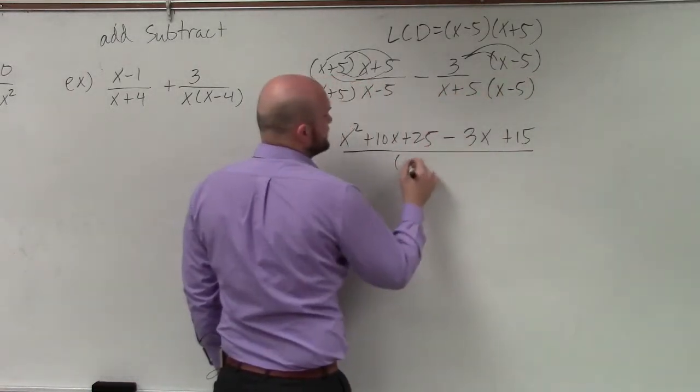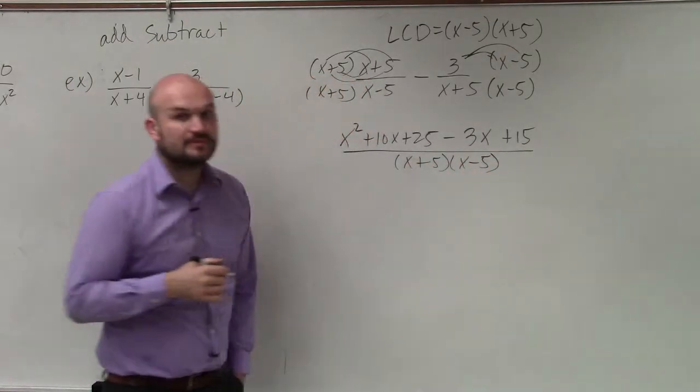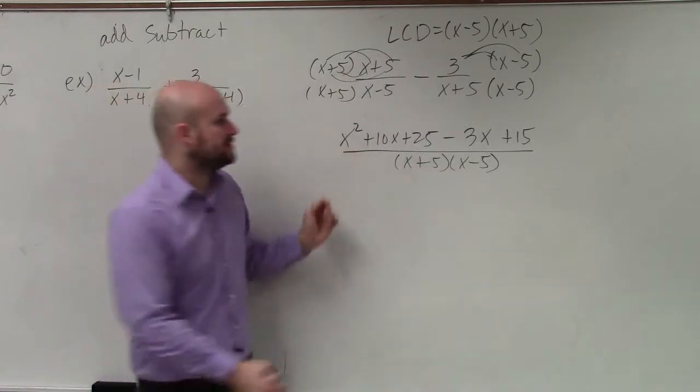And that's all over my common factor x plus 5 times x minus 5. Now, basically, what I'm going to do is combine my like terms.